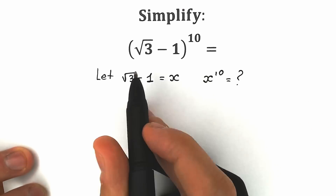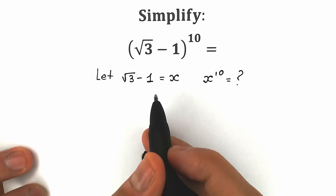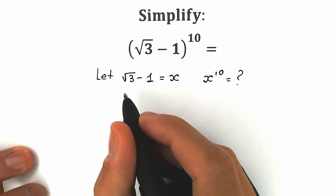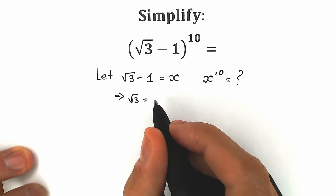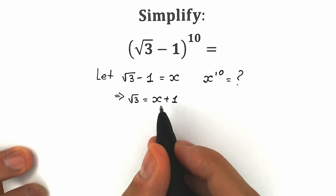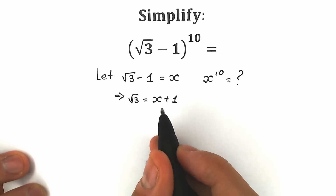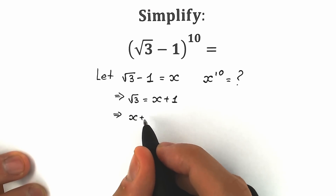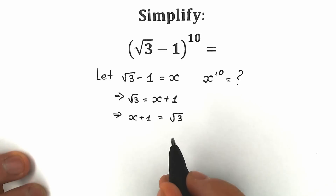Let's look closely at this expression. We have square root of 3 minus 1 equal to x. Now let's bring the minus 1 from our left side to the right side. As a result, we have square root of 3 equal to x plus 1. We prefer x on the left side, so let's write x plus 1 equal to square root of 3.